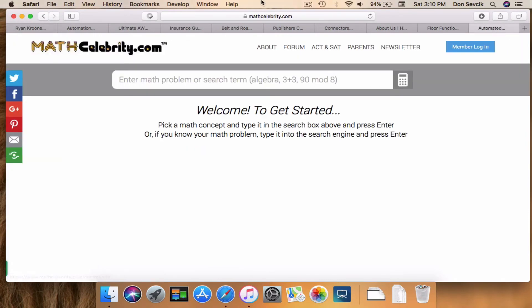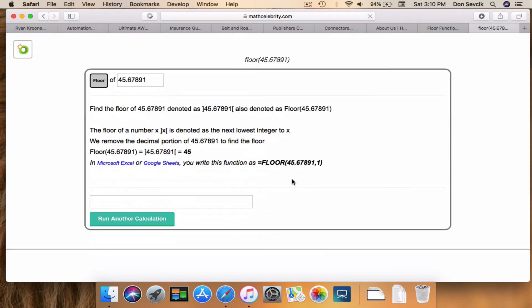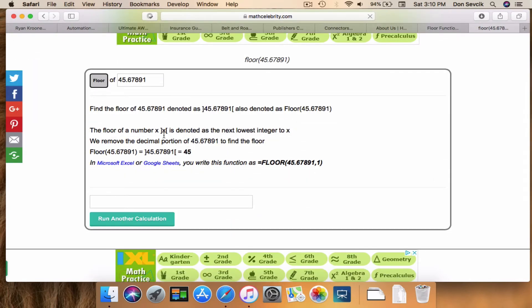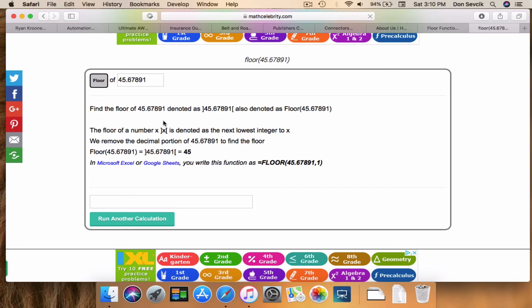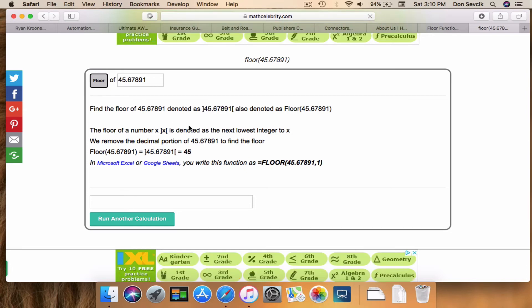So let's go ahead and say floor 45.67891. Hit return and it will run the steps from our floor presentation. And so it figures out it's not an integer, it's a decimal. Find the greatest integer less than the number, which is 45.